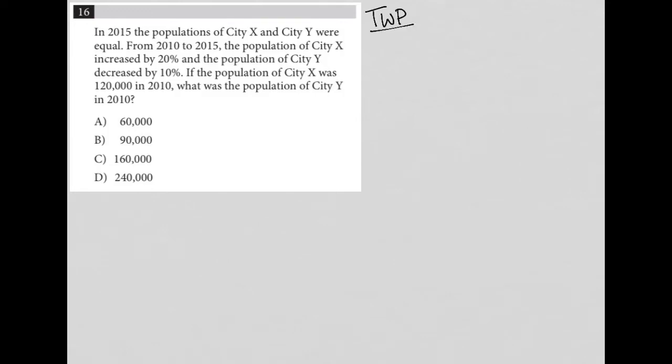This question is a translate word problem. What we want to do is read a sentence at a time and make sure to write down any quantitative information as we go. The first sentence says: in 2015, the populations of city X and city Y were equal. So I'm going to write that down — the year is 2015, and X equals Y for the population.